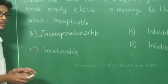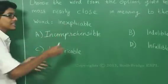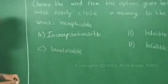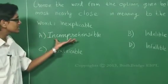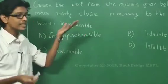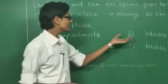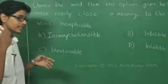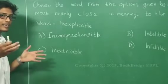Explicable means you are able to understand, so inexplicable basically means you are not able to understand. Incomprehensible seems to be a synonym of inexplicable. Option B, indelible, means making a mark that cannot be erased.